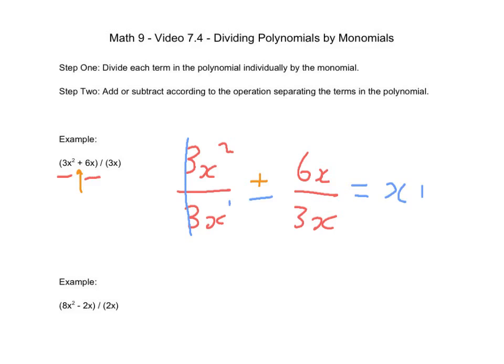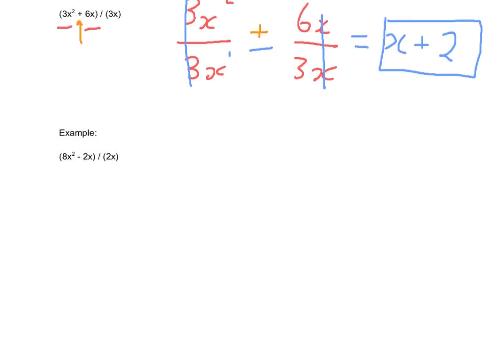Then now I've got add plus 6x divided by 3x. The x's cancel out. 6 divided by 3 is 2. The answer is going to be x plus 2. Not too bad. Let's do another example here.